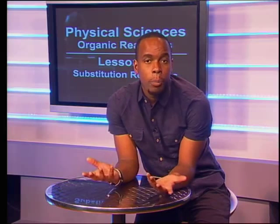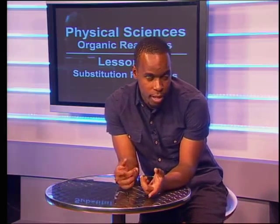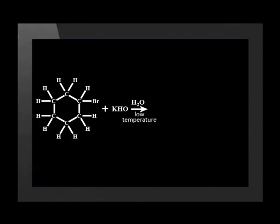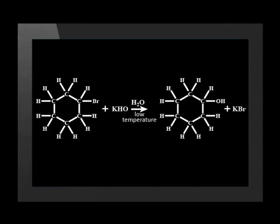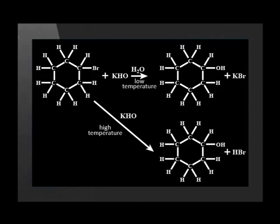What are the products of this reaction? The hydroxide ion replaces the bromine on the molecule shown here. When the bromine swaps places with the hydroxide ion, the product is cyclohexanol and potassium bromide. Note that the same chemicals are used for both elimination and substitution. When we want to do substitution, colder temperatures and water are used.